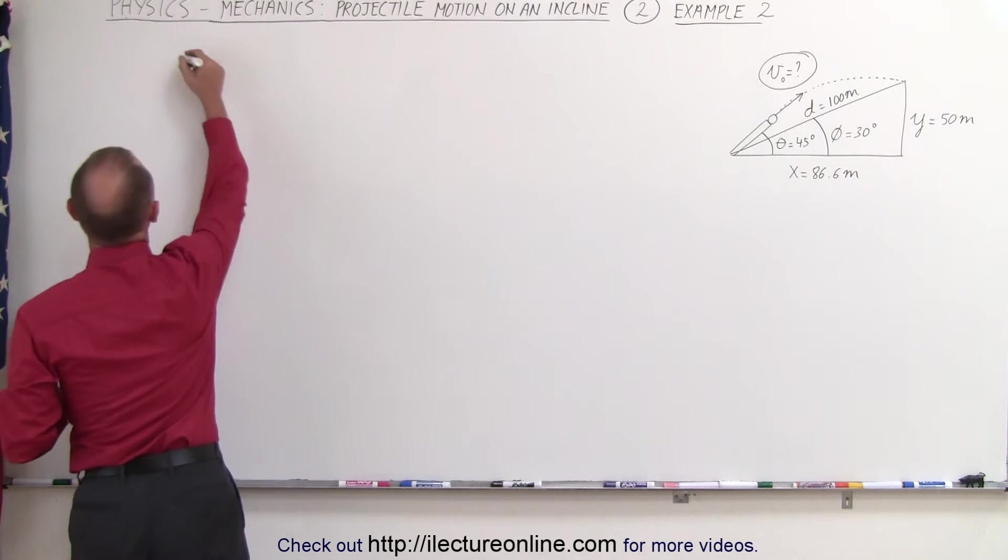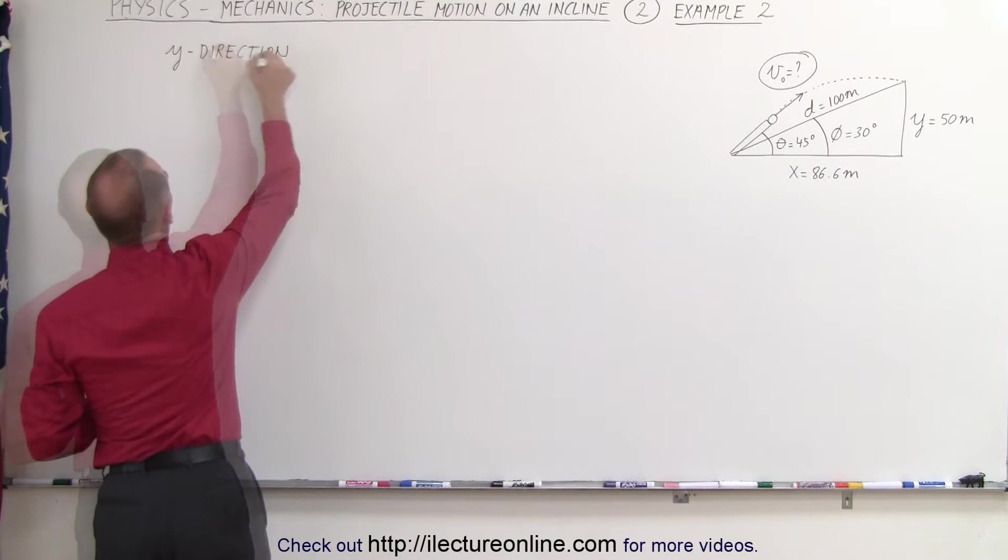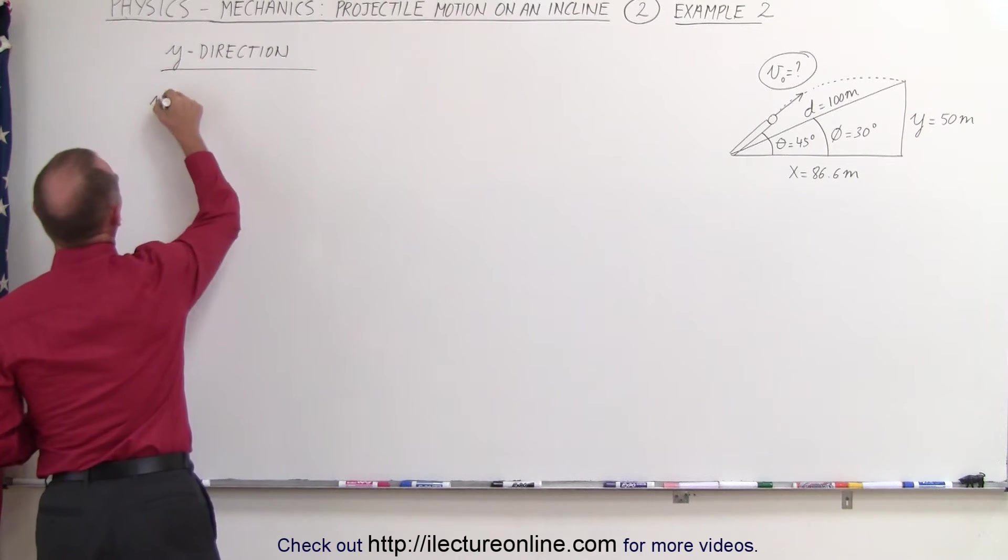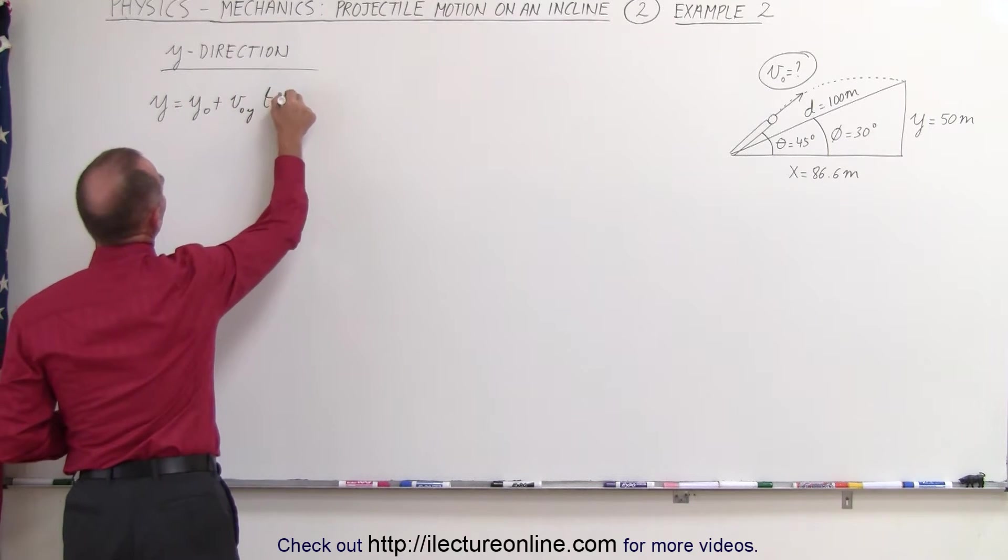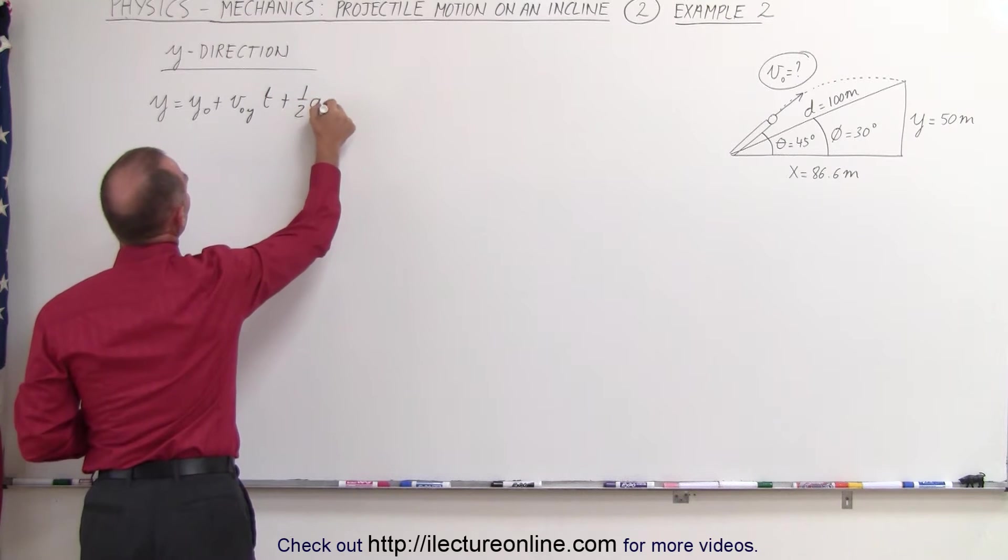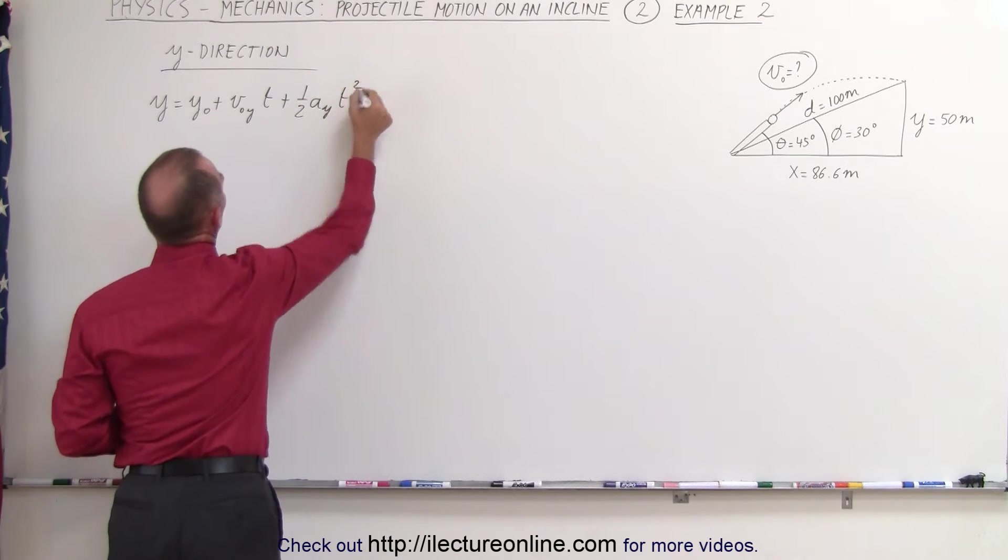Starting with the y direction, we have the equation y equals y sub-naught plus v sub-naught in the y direction times time plus one-half a in the y direction times time squared.